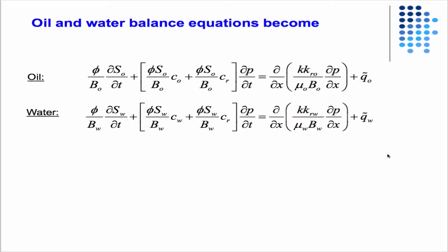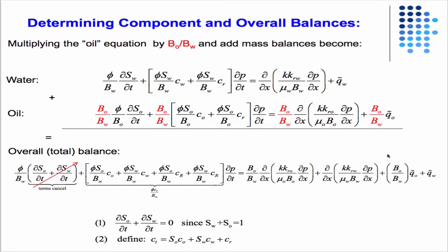Then we're going to add the two equations together and multiply through by the ratio of the formation volume factors, BO over BW. When we do that, we get this equation, and then we have the volume fraction constraint that says the saturation of water plus the saturation of oil should equal one, which causes this term to go away because we've taken the time derivative of one.